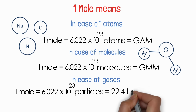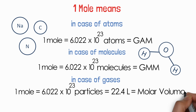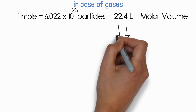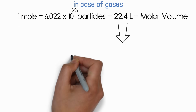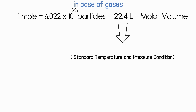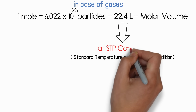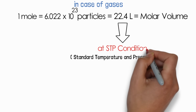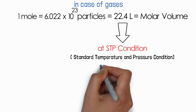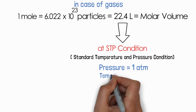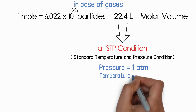This molar volume applies because pressure or temperature changes alter a gas's volume. So 1 mole equals 22.4 litres only at standard temperature and pressure (STP) conditions. STP means pressure = 1 atmosphere and temperature = 273 Kelvin.